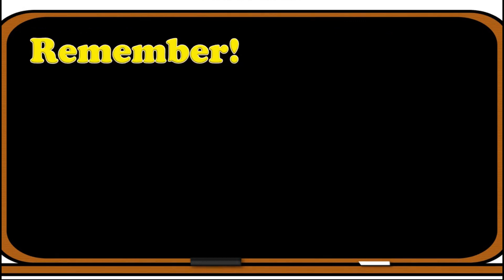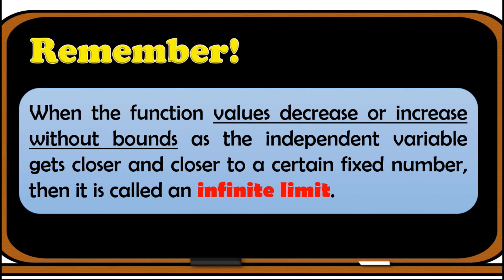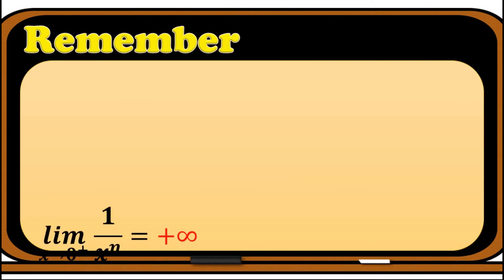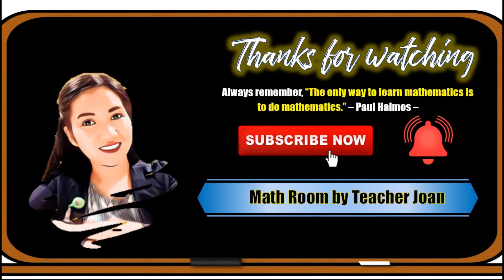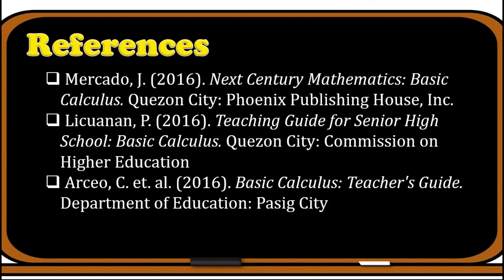Great job! To summarize: when the function values decrease or increase without bounds as the independent variable gets closer and closer to a certain fixed number, it is called an infinite limit. There are theorems to help evaluate these limits. That will be all for this video. Thanks for watching — please like, comment, and share. If you are new to the channel, don't forget to subscribe and hit the notification bell for the latest math tutorials. See you on the next video!